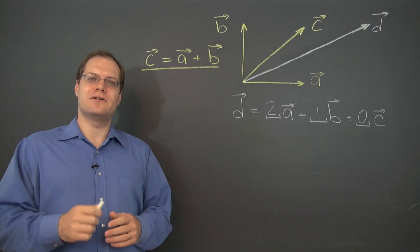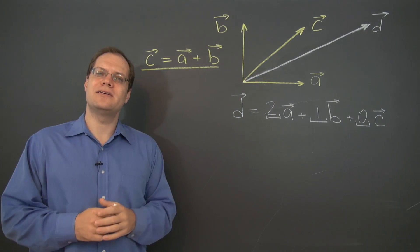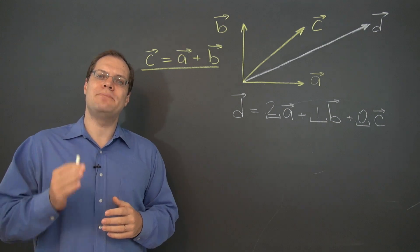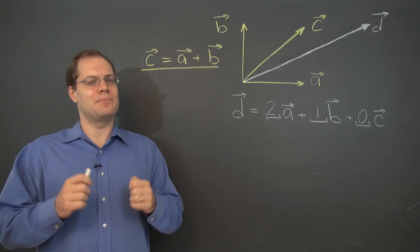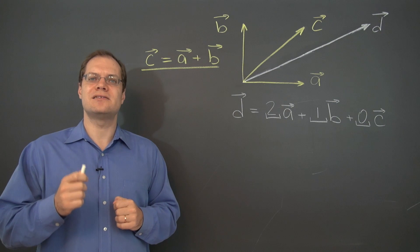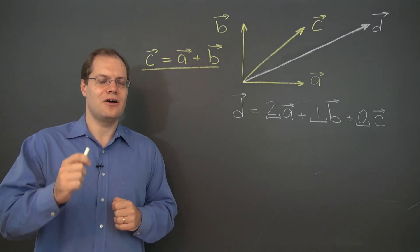In the last video, we discovered that the vector d can be expressed by linear combinations of a, b, and c in an infinite number of ways. That led us to our first definition of linear dependence.